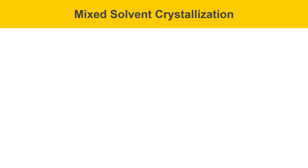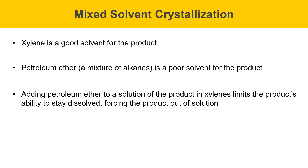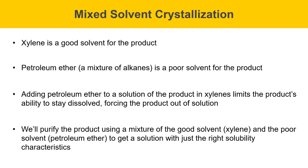Today we're using a mixed solvent recrystallization system. Xylene is a very good solvent for the product, so the product would never come out of solution if xylene alone were used. Petroleum ether is a poor solvent that hardly dissolves the product at all. Mixing the two together gives a solvent with just the right characteristics for recrystallization — a good solvent when hot and a poor solvent when cold. Adding petroleum ether to a solution of the product in xylene limits its ability to stay dissolved, forcing it out of solution as crystals.